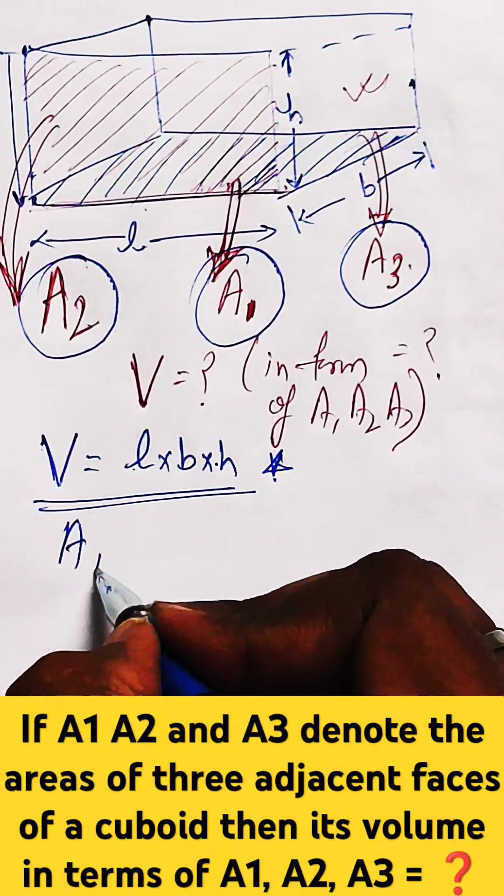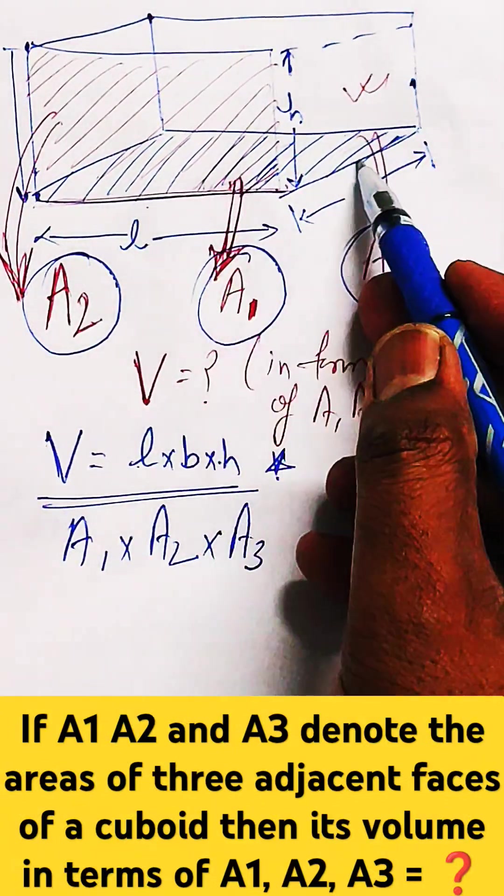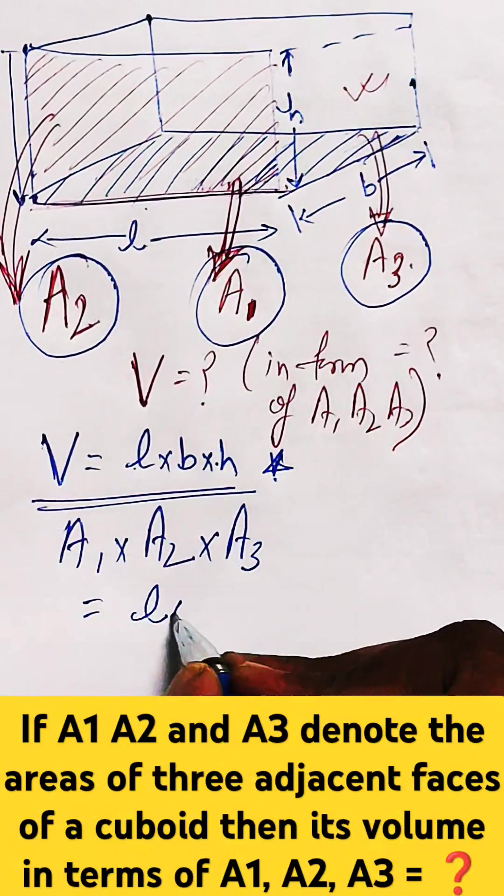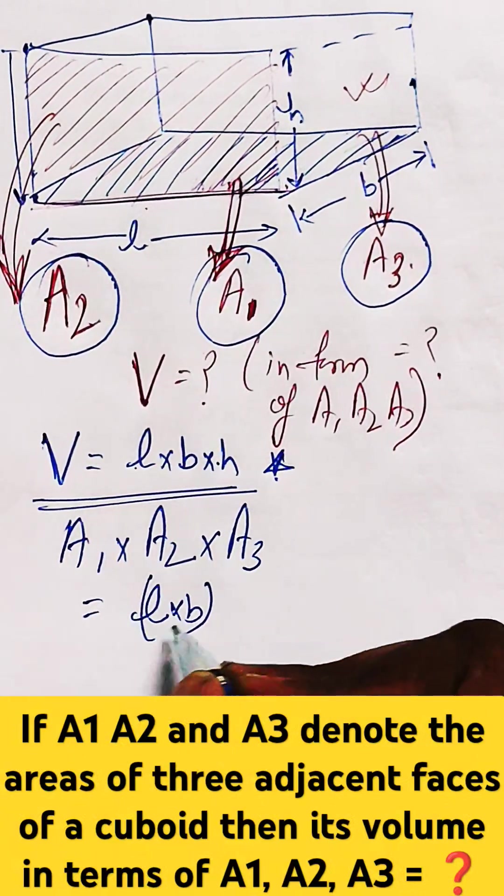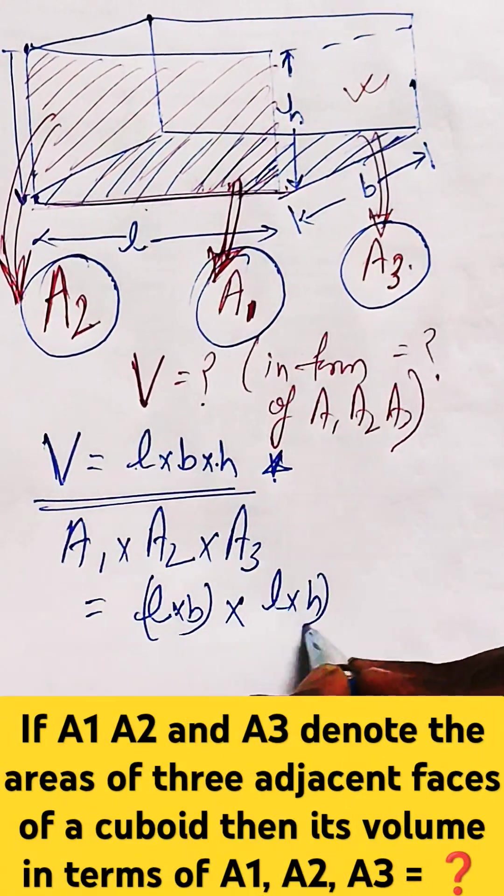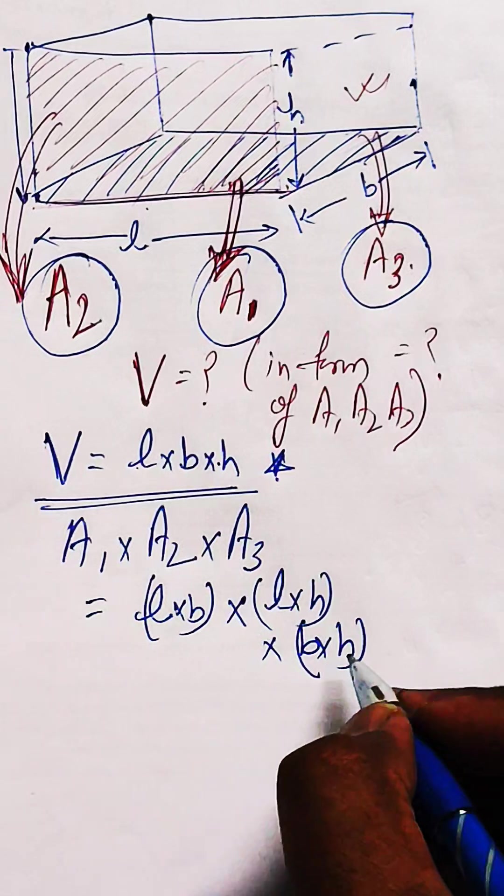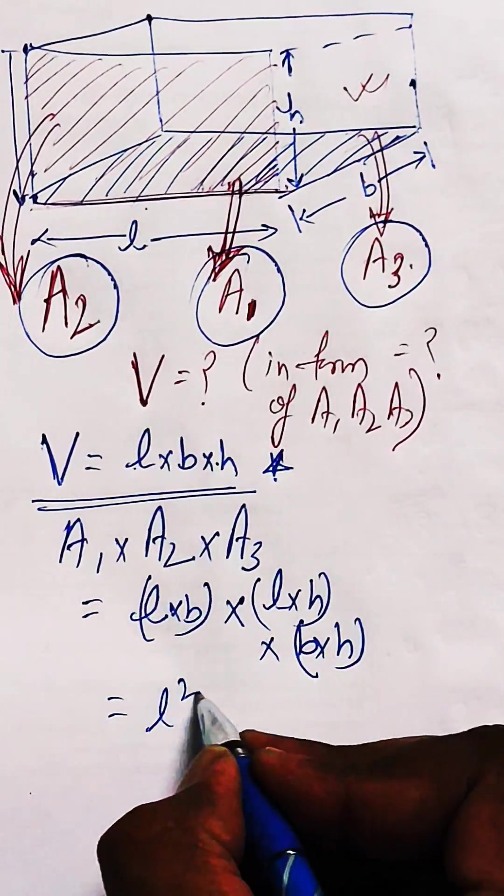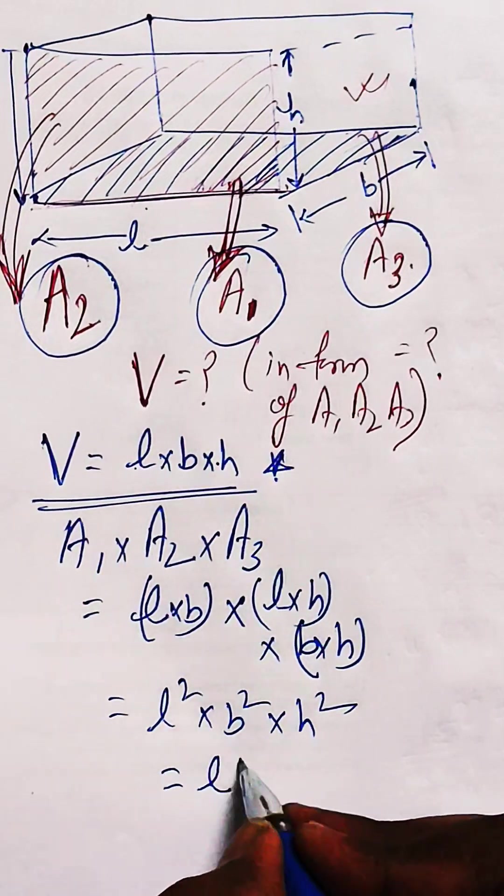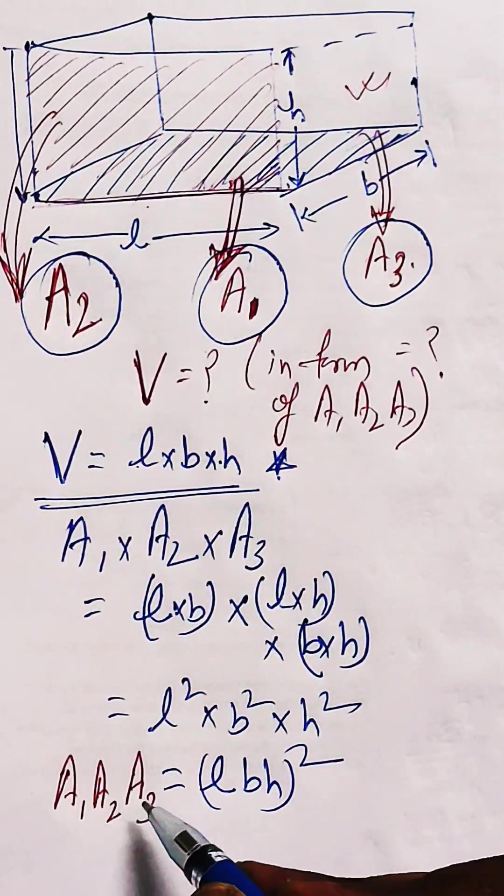And when you multiply A1 with A2 and A3, all these three faces area, what you will get, you will get L into B multiplied with A2, that is L into H multiplied with B into H, isn't it? And it can be written as L square, B square, H square, which is equal to L, B, H whole square. Basically, A1, A2, A3.